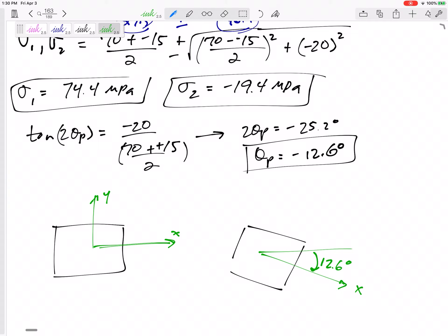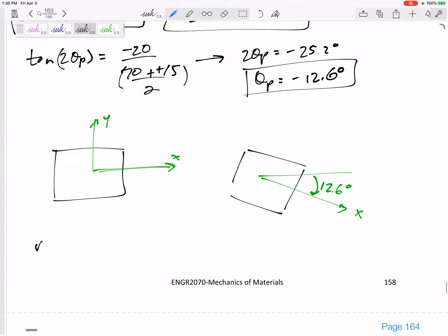Alright, and so what do I need to do? I need to plug negative 12.6 into my original stress, my—let's call it my sigma x prime stress transformation equation.